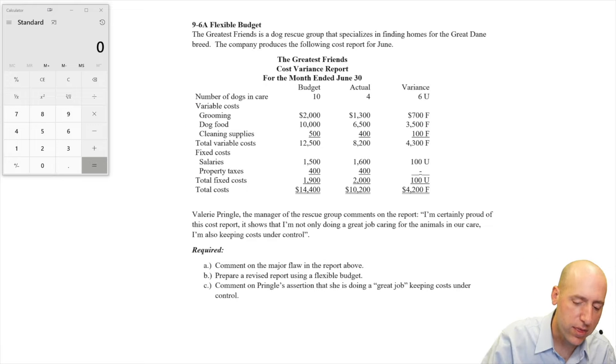Now, let's just read the report, and you can see they had fewer dogs than they were planning to have, and their costs were down from their budget. And you know, $4,200 favorable, they spent a lot less than they budgeted to spend, but you would expect that given that fewer dogs were in care.